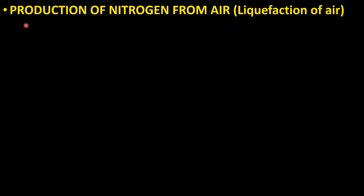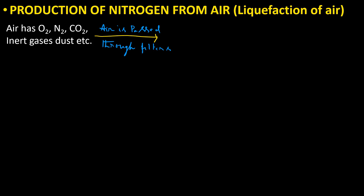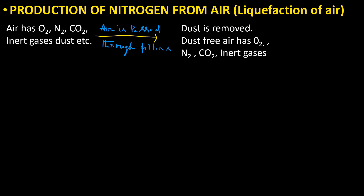Production of Nitrogen from Air — that is liquefaction of air: Air has oxygen, nitrogen, carbon dioxide, inert gases, and dust particles. The mixture of air is passed through filters, which removes dust. Dust-free air contains oxygen, nitrogen, carbon dioxide, and inert gases.